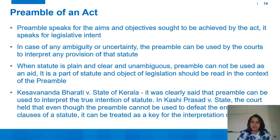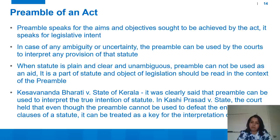The next internal aid is the preamble of an act. The preamble is provided before the act and sets out its purpose. It speaks for the aims and objectives sought to be achieved by the act and for the legislative intent behind making the statute. In case of any ambiguity or uncertainty, the preamble can be used by the courts to interpret any provision. When the statute is plain, clear and unambiguous, the preamble cannot be used as an aid.